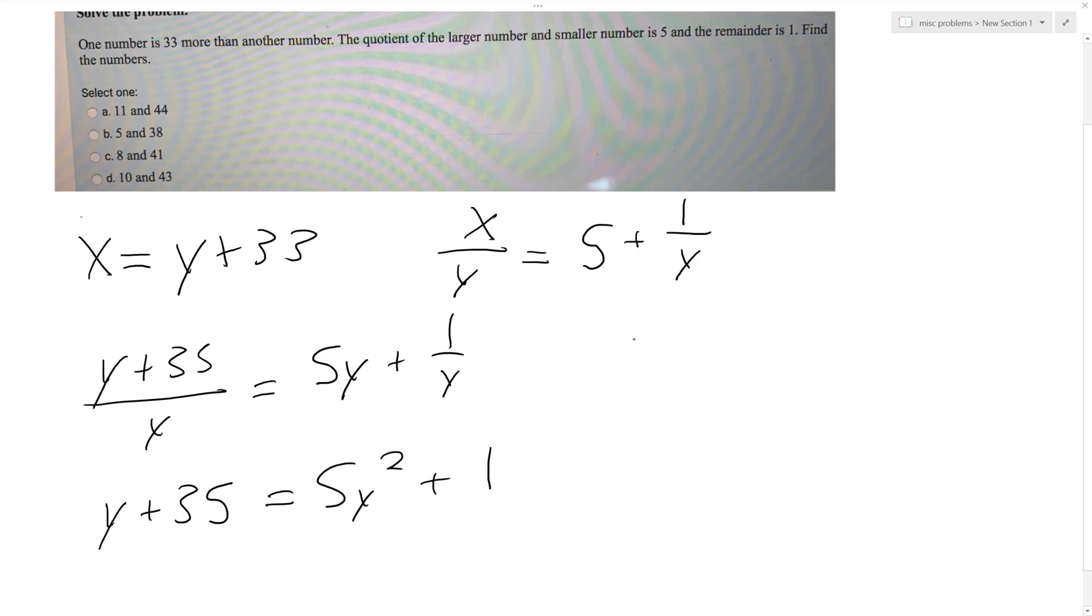So if we get everything on one side of the equation, we end up with 5y squared minus y minus 34 equals 0.